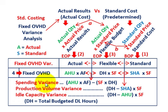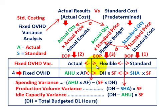Let's start with our spending variance. That's looking at the difference between our actual amount for the period versus what we have determined for our flexible budgeted amount.